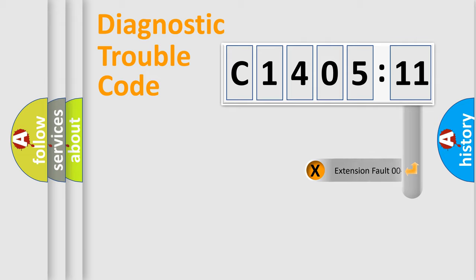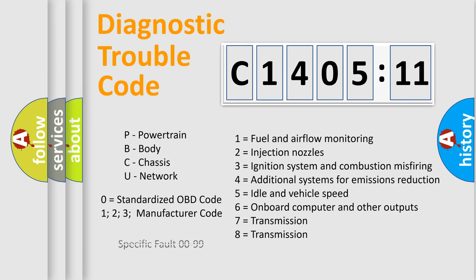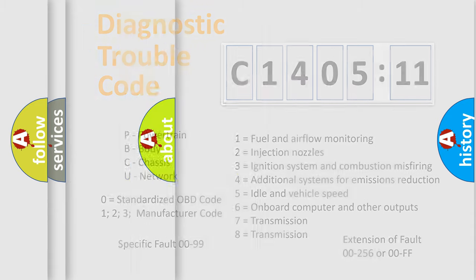Only the last two characters define the specific fault of the group. The add-on to the error code serves to specify the status in more detail, for example, short to the ground. Let's not forget that such a division is valid only if the other character code is expressed by the number zero.